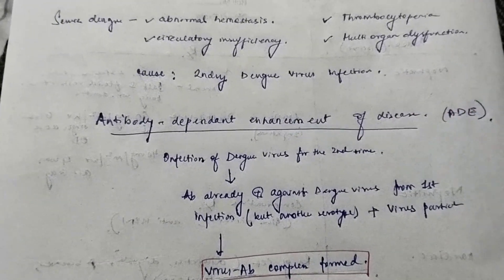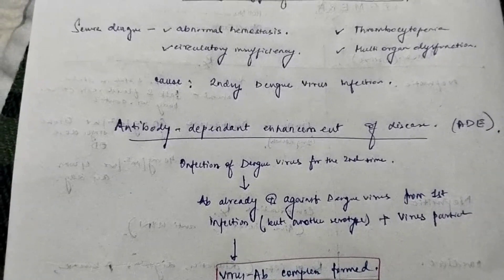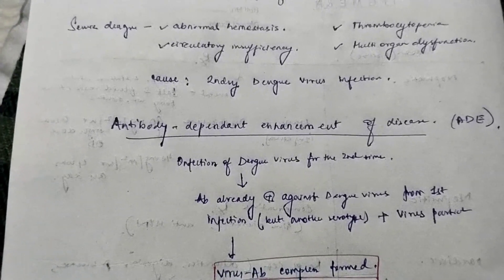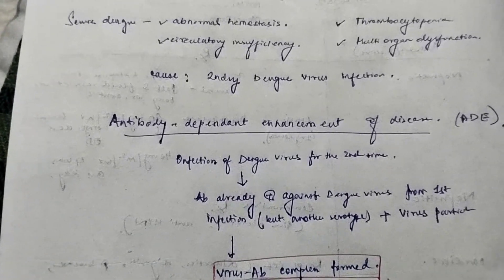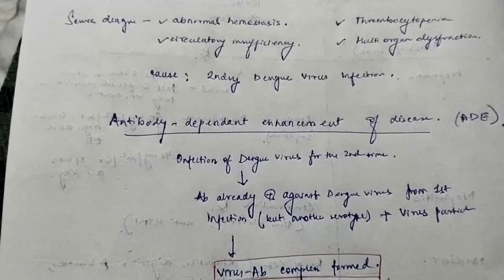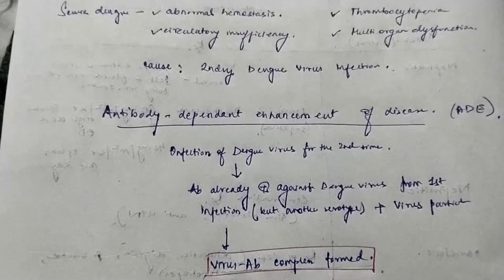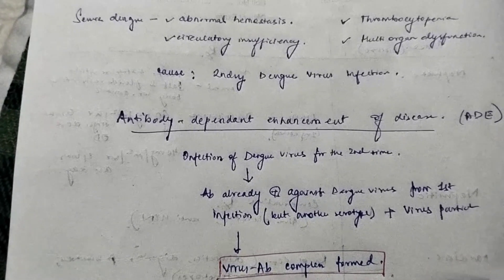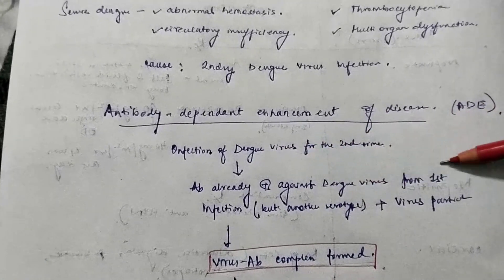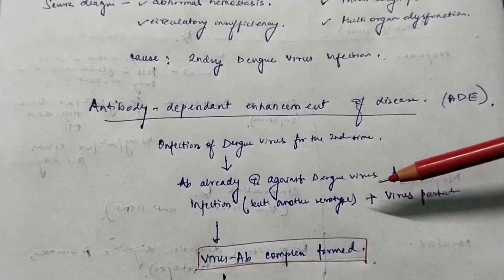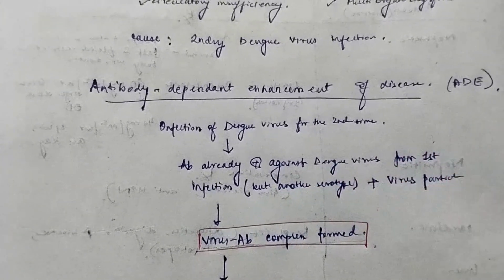So this involves infection with the Dengue virus for the second time. Suppose you had a Dengue infection for the first time — antibodies were produced against the serotype of that DEN virus and are now present in your body. If you are then infected with the Dengue virus a second time, this DEN virus is usually of a different serotype. That means the previous antibodies will not be able to neutralize this new infection. Instead, the previous antibody will form a complex with the new DEN virus — a virus-antibody complex.